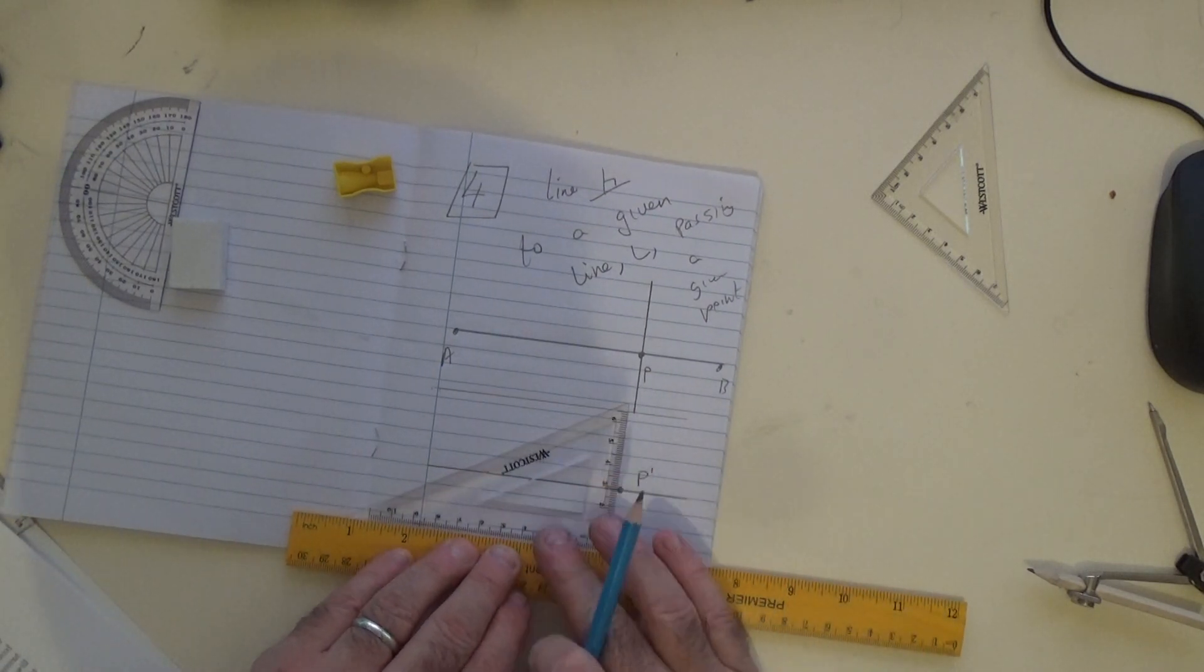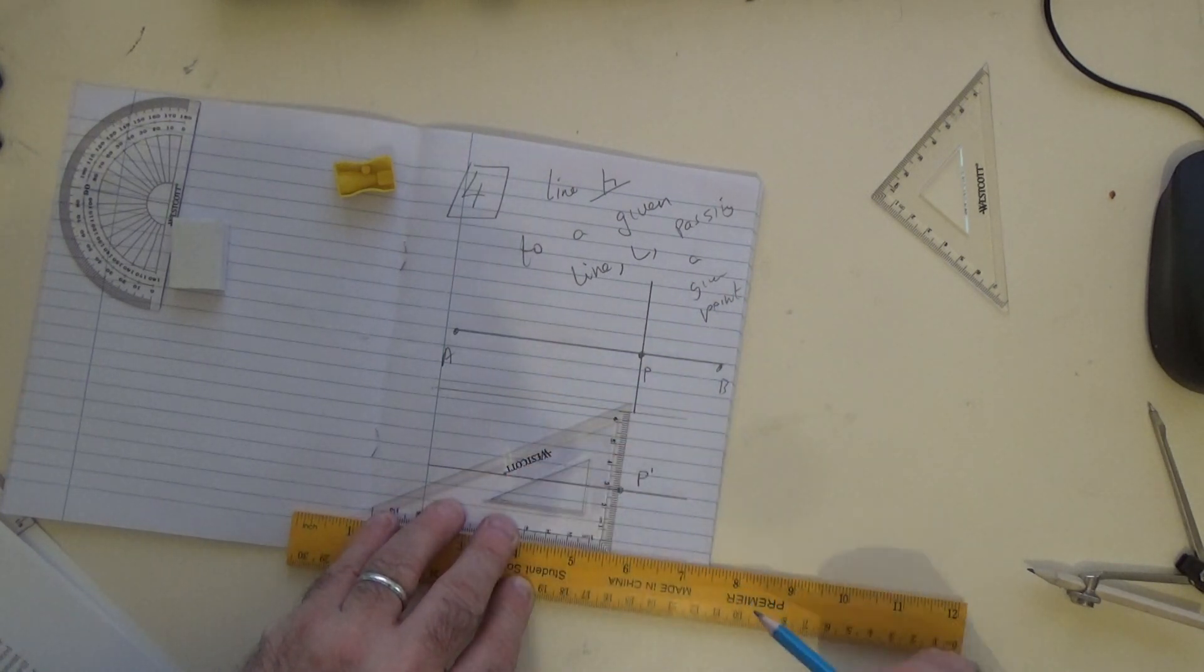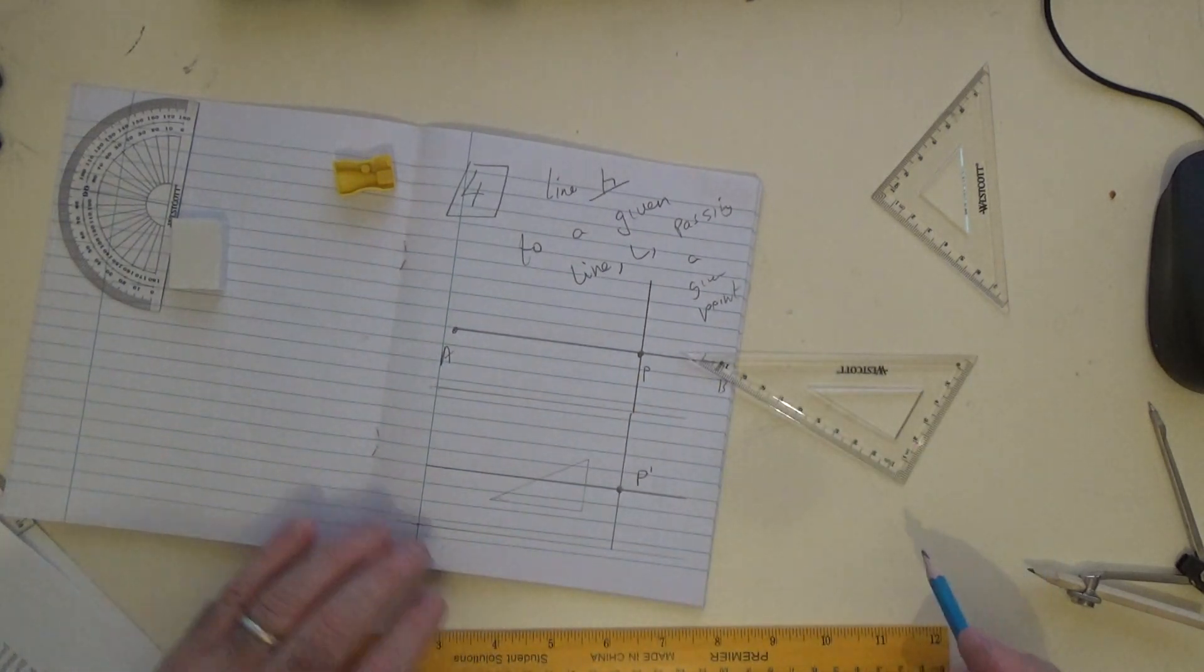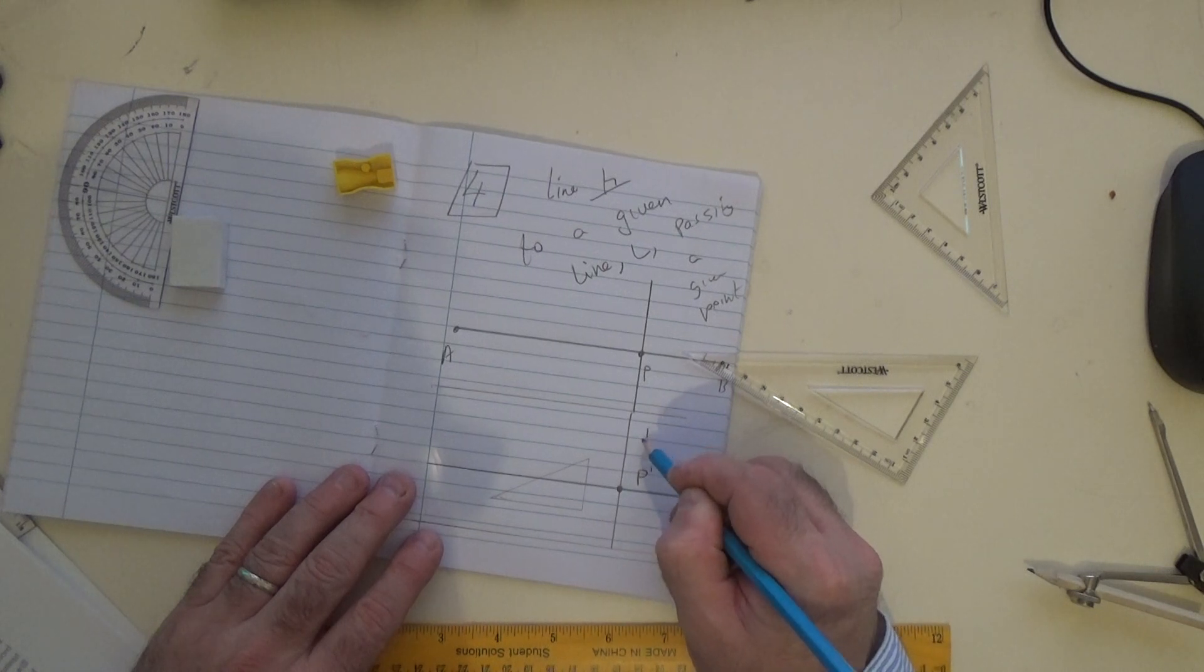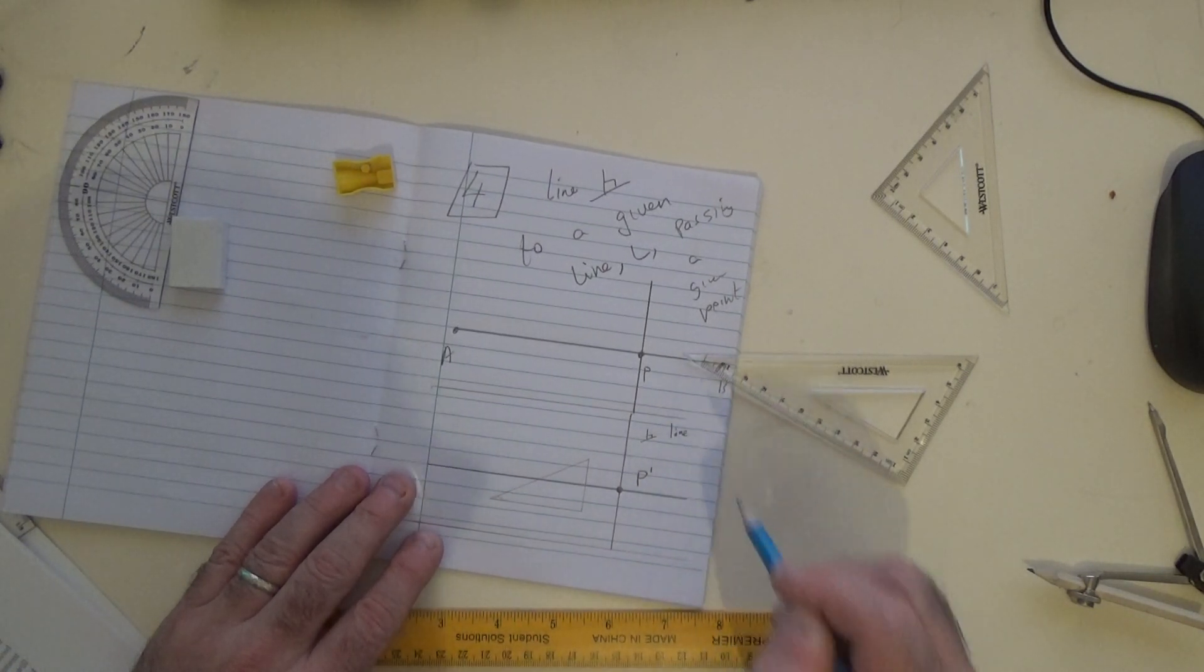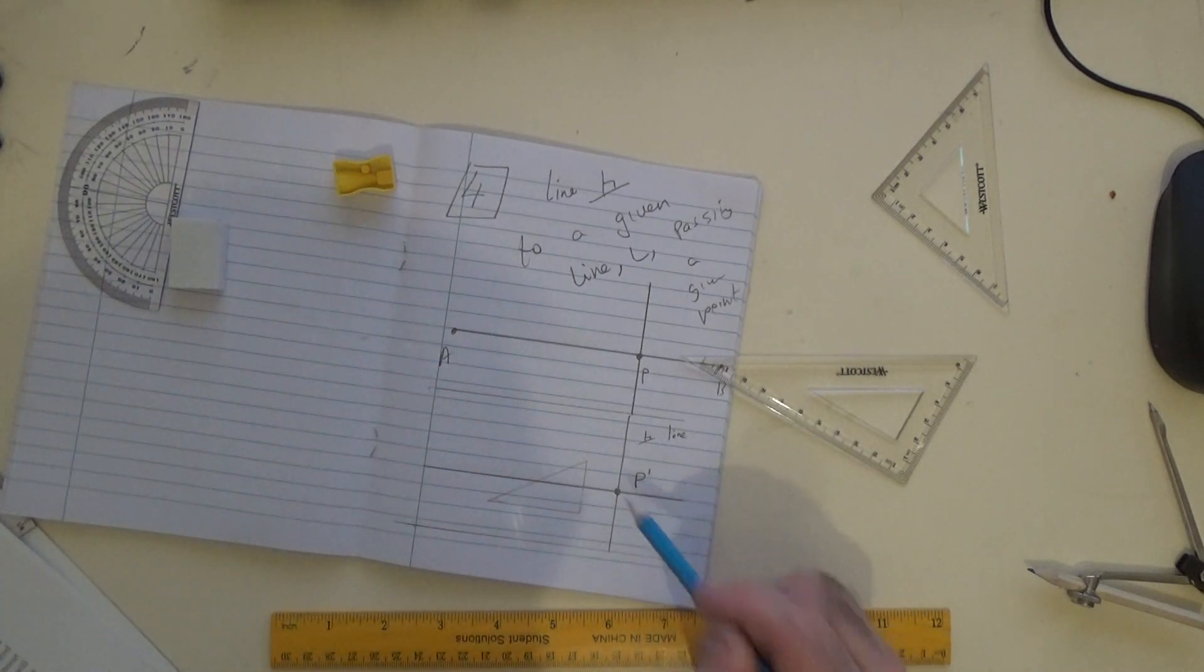Take your set square—you might just tell them, 'hey look, I just used a set square'—and that's the perpendicular line. It's not a bisector because it doesn't bisect anything, but it's a perpendicular line through P.